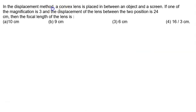In the displacement method, a convex lens is placed between an object and a screen. This is the convex lens placed between the object and the screen, where this distance is U and this distance is V.